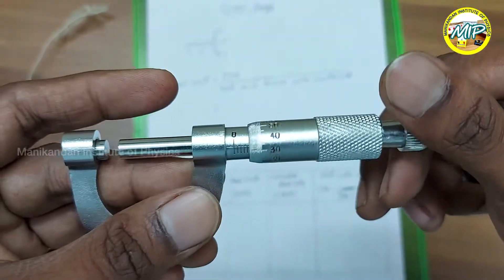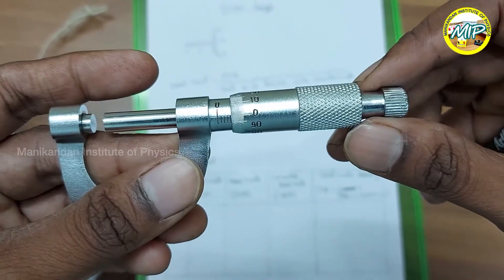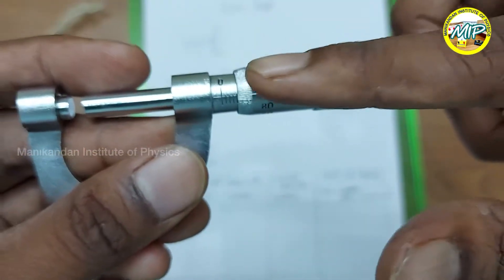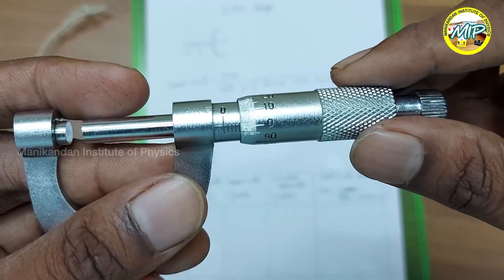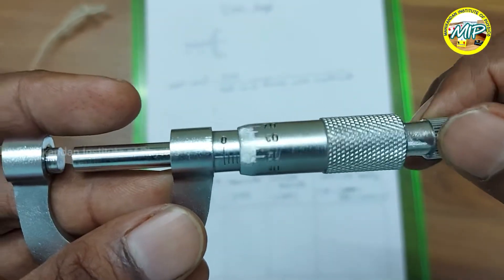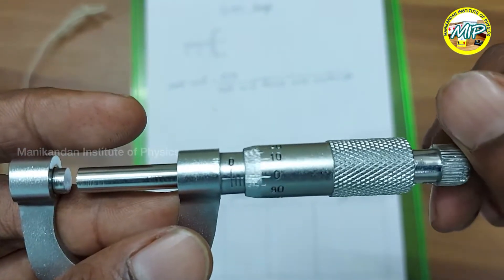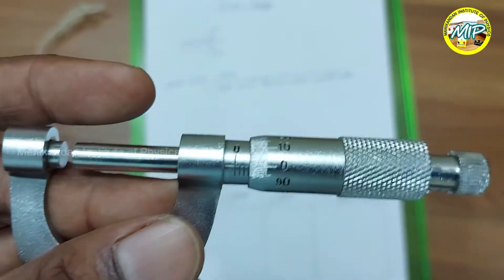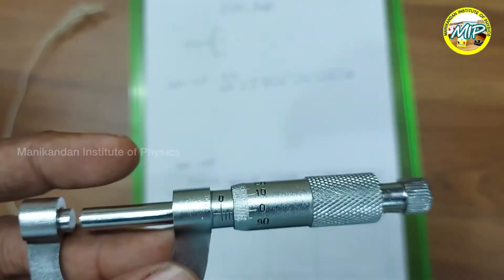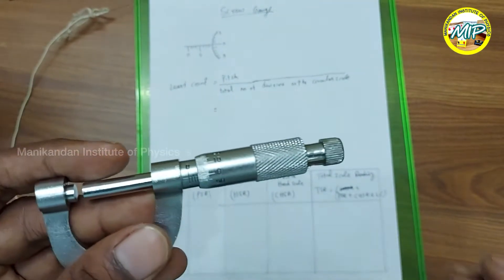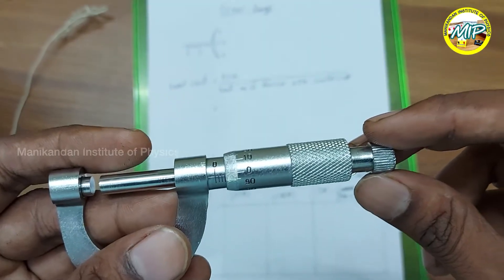The circular scale has 100 divisions, starting from 0 to 100. If I rotate the circular scale one complete rotation, there is a motion of one reading on the main scale. So to get one main scale movement, I have to rotate one complete circular scale rotation.